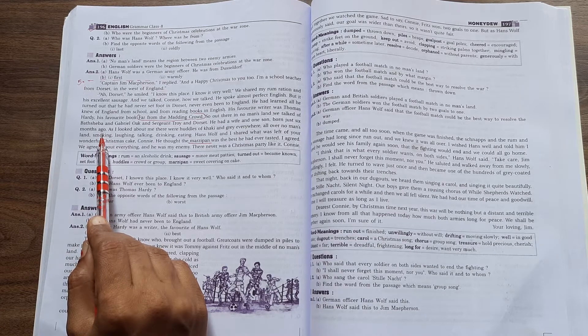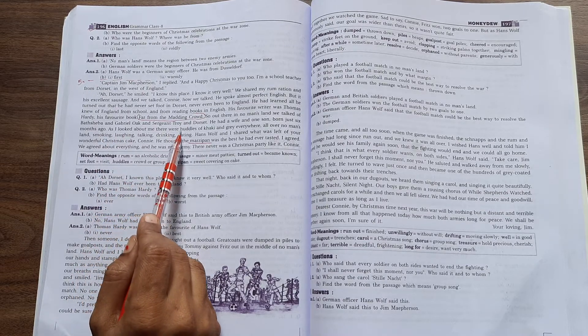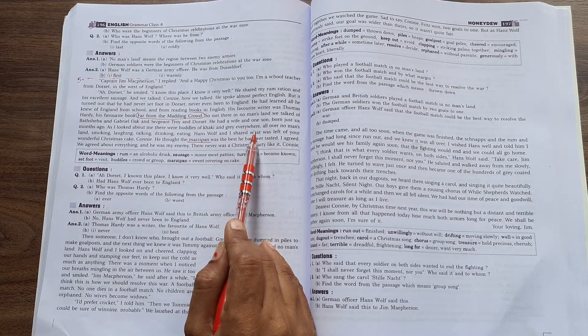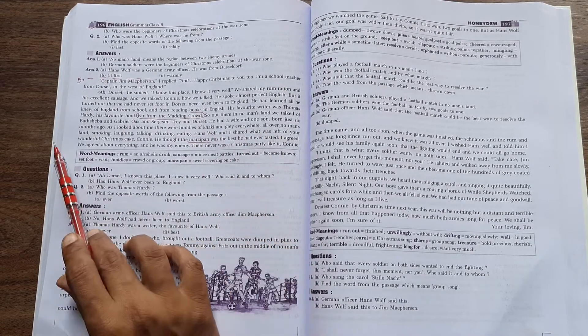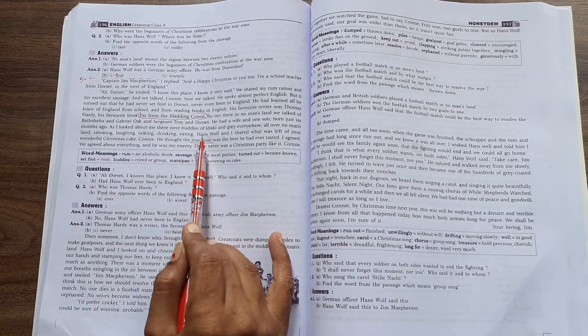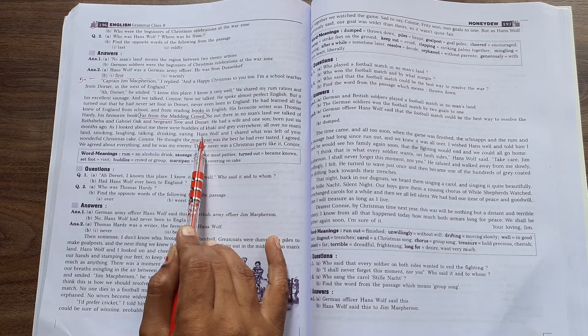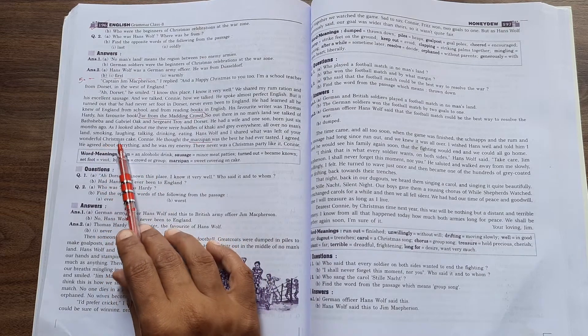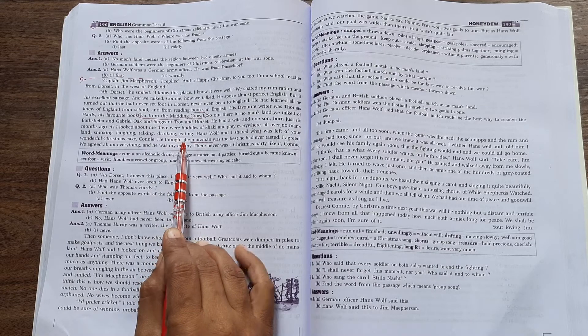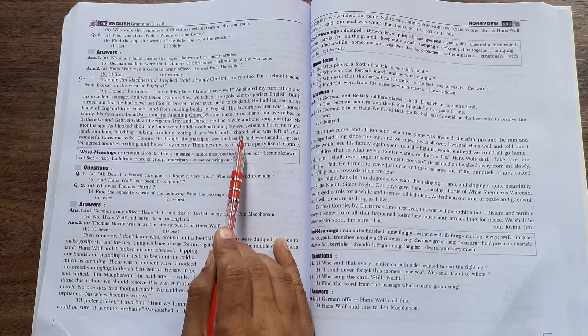As I looked about me, there were heaps of khaki and grey everywhere, all over no man's land - smoking, laughing, talking, drinking, eating. As I looked around while talking, I saw khaki uniforms. Some were smoking, some drinking, some laughing, some talking, some eating sausage. That's what I was seeing.